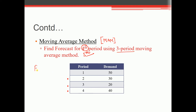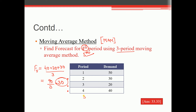Forecast for the fifth period: 40 + 20 + 30, divided by 3. That is 60 + 30 = 90, divided by 3 = 30. So the forecast for the fifth period is 30.